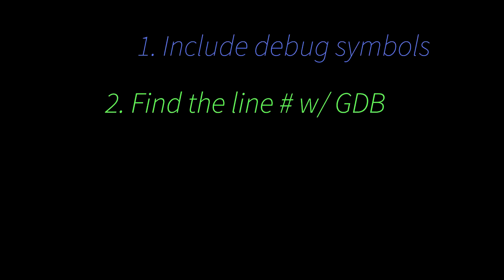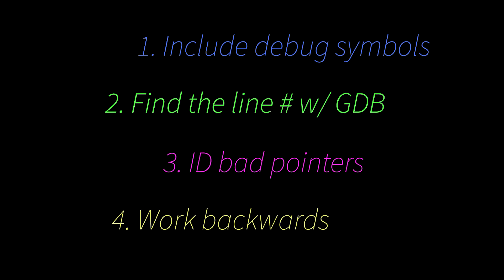The rest of how you solve the problem is going to depend on your specific situation. Next time you have a segfault, remember these steps: include debug symbols, use GDB to find where the segfault is happening, identify the problematic address, and then work backwards to figure out where it came from. The fix usually should be pretty obvious.